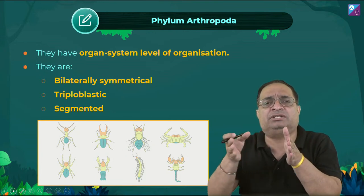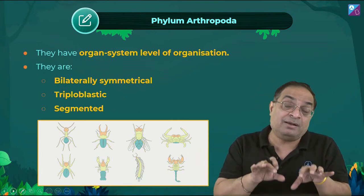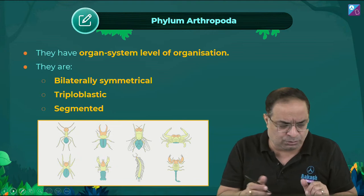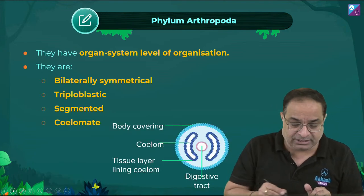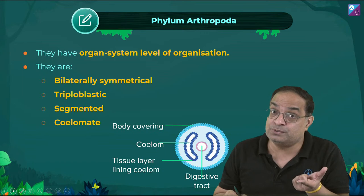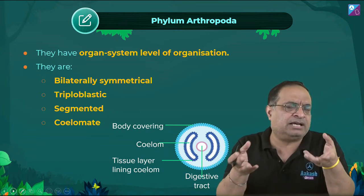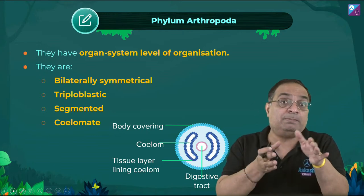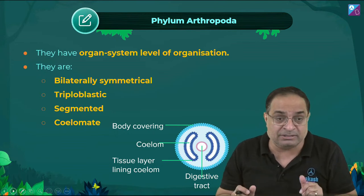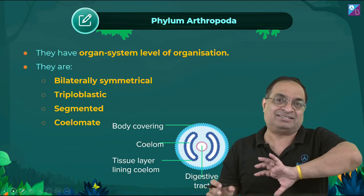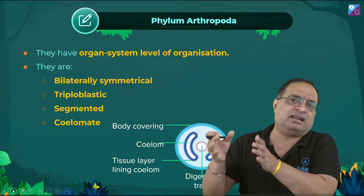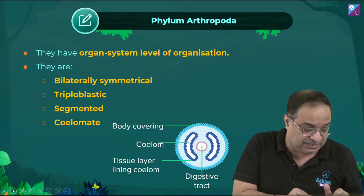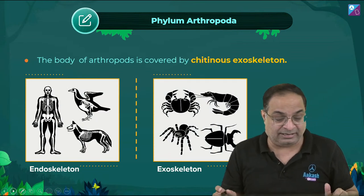Arthropods have metameric segmentation — the body is divided into small segments called metameres, just like in Annelida. In cockroach, for example: head, thorax, and abdomen are segments. Bilateral symmetry means the body can be divided into two equal halves by a plane through the central axis. Triploblastic means the body is formed from three germ layers: ectoderm, mesoderm, and endoderm. Coelomate animals — true coelom began from Annelida onwards; Aschelminthes had pseudocoelom, Platyhelminthes were acoelomate.